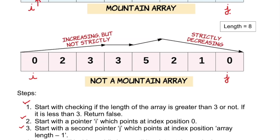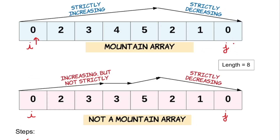The third step is to place a second pointer j pointing at the length minus one index position — that's index seven here. We then iterate i from left to right and j from right to left, both moving toward the peak element. In this example, the peak is the highest element in the array.